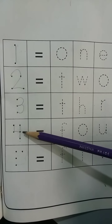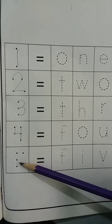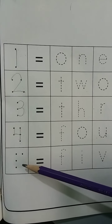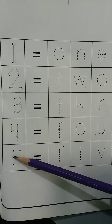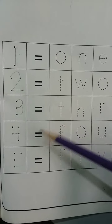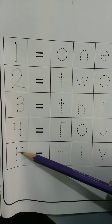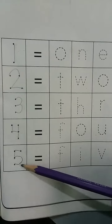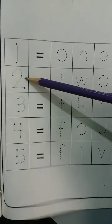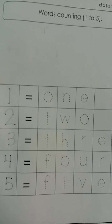Now tell me what comes after 4? 5. Now write 5 here. Kids, tell me how many dots are there? 1, 2, 3, 4. There are 4 dots. Now join the dots and make 5 like this. What is this? This is 5. Count with me: 1, 2, 3, 4, 5. Okay kids?